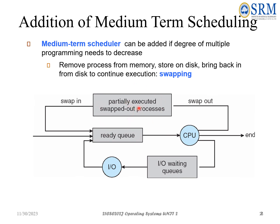Coming to the mid-term scheduler, we have a swapping technique. We can add a degree of multi-programming needed by decreasing or removing the process from the memory. If there is a prioritized process to be allocated, the process which is running in the CPU is going to swap out, and the prioritized process gets into the processor. The swapped-out process, which was partially executed, is again swapped in to the ready queue.